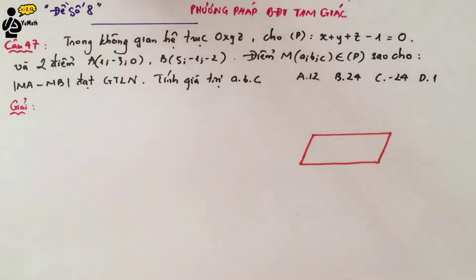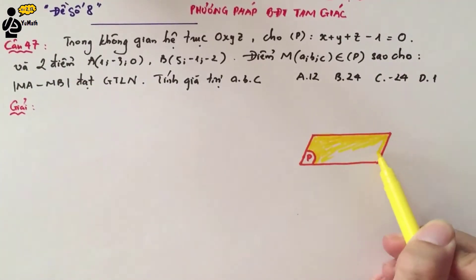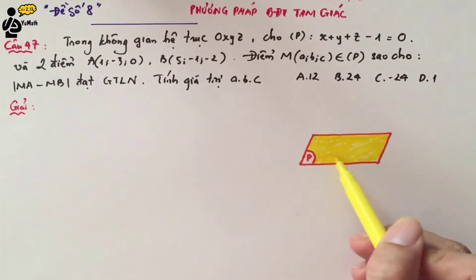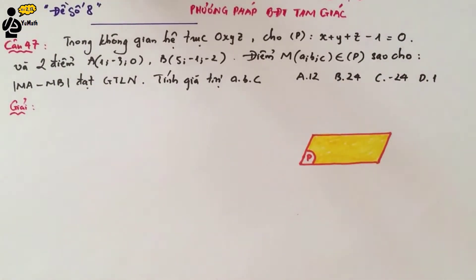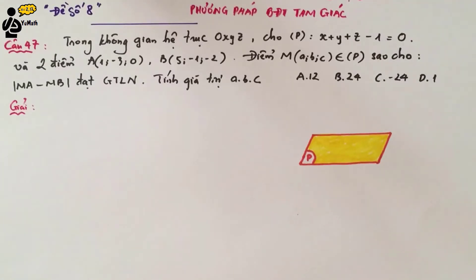As you know, plane P divides space into two regions: the negative region and the positive region. The first thing you need to do in this problem is to determine the positions of points A and B — specifically, whether they lie on the same side or on opposite sides of plane P.